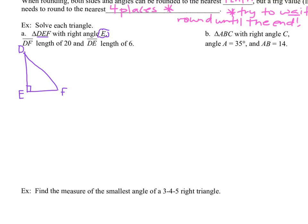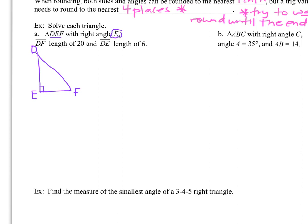Now marking the information with what we know: DF, the length of that segment, is 20 — that's going to be our hypotenuse. And then DE, from top to bottom on that left-hand side, has a length of 6. So that's all we know. To solve the triangle means we need to find the rest of our missing parts. We know three things; we need to calculate the other three things.